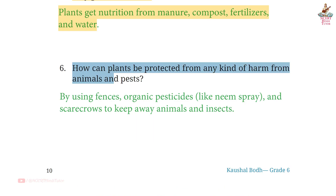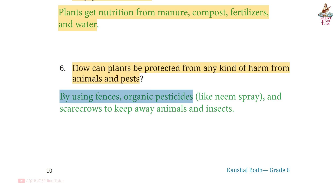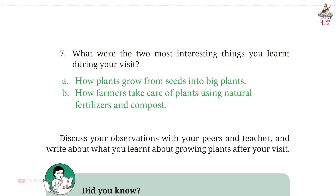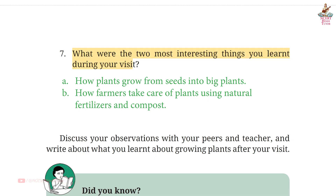Question 6: How can plants be protected from any kind of harm from animals and pests? Answer: By using fences, organic pesticides like neem spray, and scarecrows to keep away animals and insects.